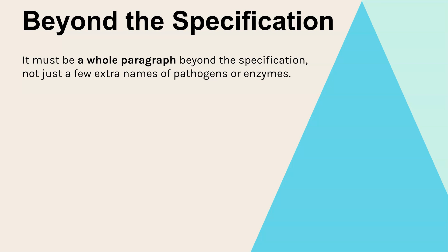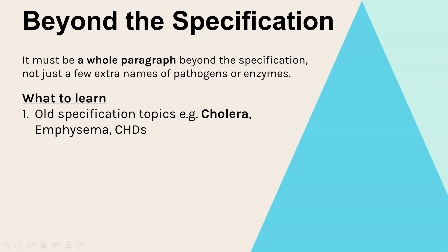To get those beyond the spec one or two marks it has to be a whole paragraph — it can't just be a few extra names thrown in. My top tip is to look at some of the old specification topics. Before the spec changed in 2015, some things were taken off, and that means they'll be in old textbooks that you can learn at the correct level of detail. Examples include cholera, emphysema, and different coronary heart diseases.